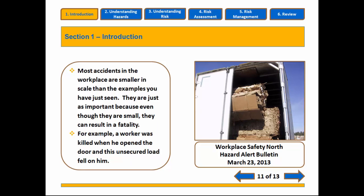Not all incidents are quite as large scale as the last few we've discussed. Here, one worker was killed because of an improperly secured load in a truck. He opened the door and the stuff in the truck fell on him and he died. This is so simple and so obvious — you can't just let stuff bounce around inside a truck. This was a risk. It wasn't recognized and managed properly, and because of that, another person died.